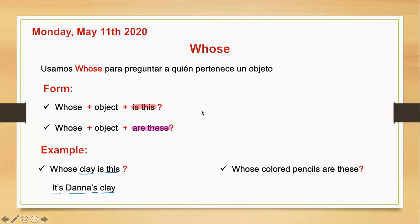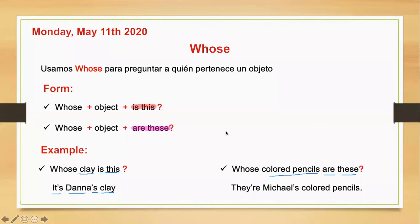Second example: whose colored pencils are these? ¿De quién son estos colores? Colored pencils is plural — aquí estoy hablando de varias cosas. Como no es un solo color sino son varios colores, por eso utilizo 'are these'. And how do we answer? I'm going to say: they're Michael's colored pencils. Como es plural, voy a utilizar 'they're', luego Michael's con el posesivo sajón, y luego el objeto que posee.